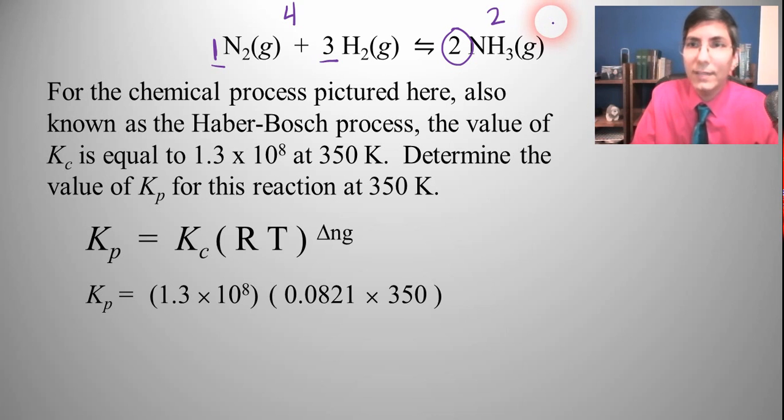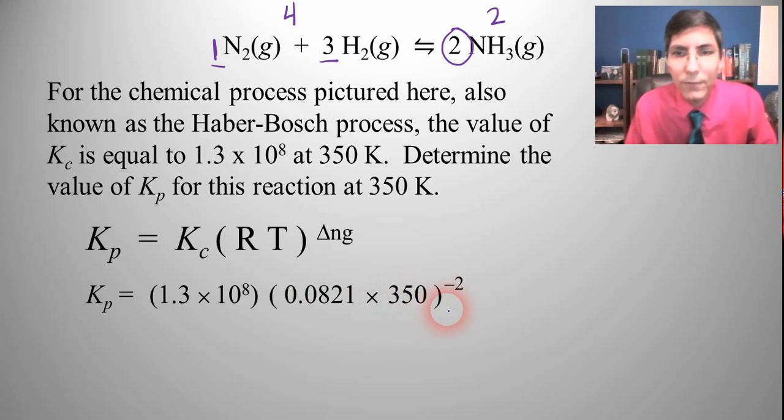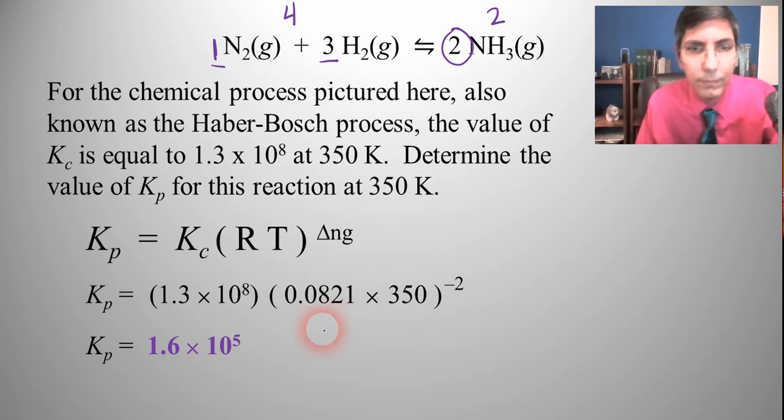That's how you calculate that. Just see how many it drops or gains by. So it went down by 2 moles. And now we can just solve the problem. So if I take my calculator and take 0.0821 times 350 to the negative 2 power and then multiply it by Kc, I get that Kp equals 1.6 times 10 to the fifth. So as we can see here it's actually a fairly straightforward process to be able to convert from Kc to Kp or vice versa.